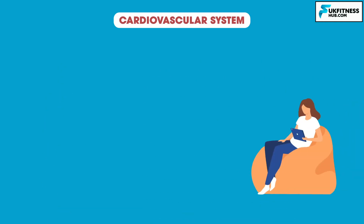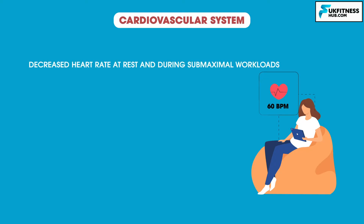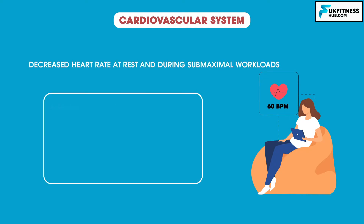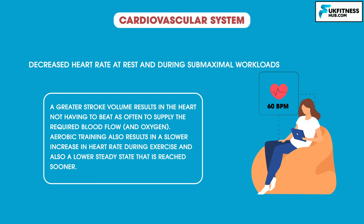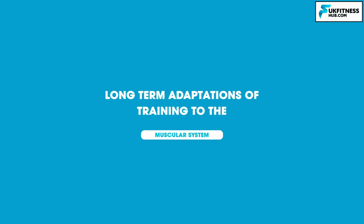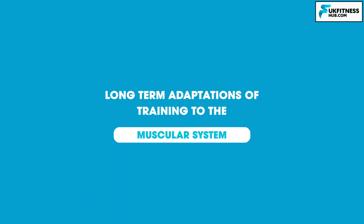Finally, another long-term adaptation to training causes a decreased heart rate at rest and during submaximal workloads. A greater stroke volume results in the heart not having to beat as often to supply the required blood flow and oxygen to the body. Aerobic training can also result in a slower increase in heart rate during exercise.